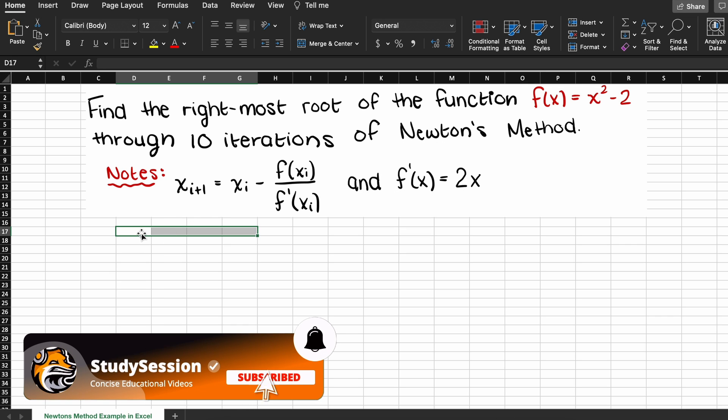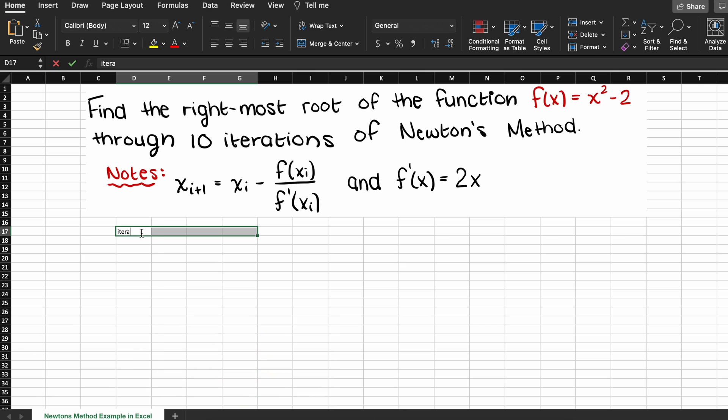Now, let's create four headers here. Let's call our first column iteration, and this will just be an easy way to quickly tell us which iteration we are currently on. Secondly, let's add x comma current. This is going to be our current x value guess at this iteration.